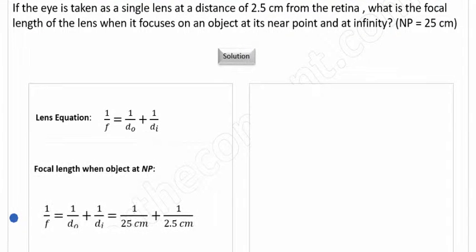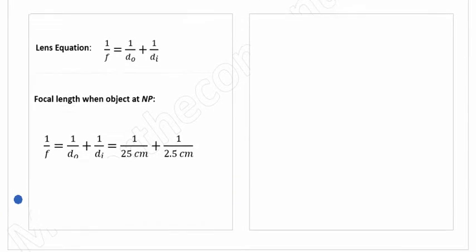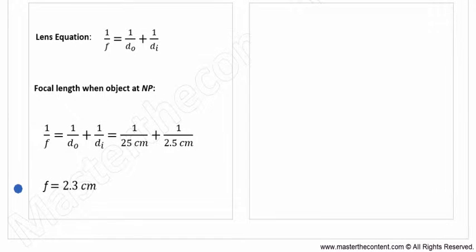Next, we can just go ahead and fill in our values. The object's distance is 25 centimeters since it's at its near point and the image distance from the lens is 2.5 centimeters. And upon solving, we find that the focal length of the lens is 2.3 centimeters when it focuses on an object at its near point of 25 centimeters.